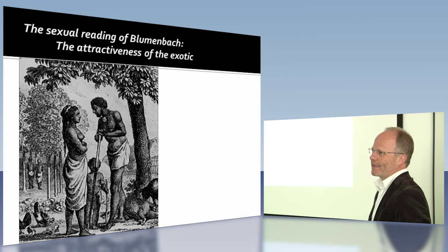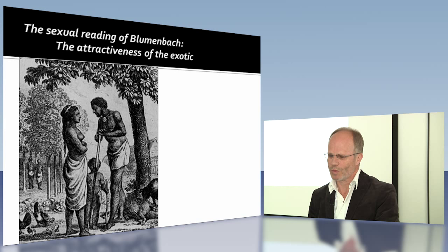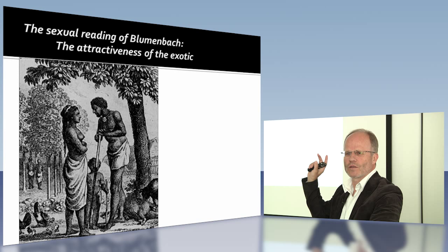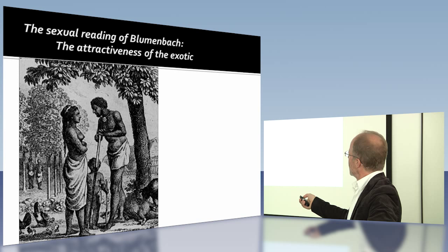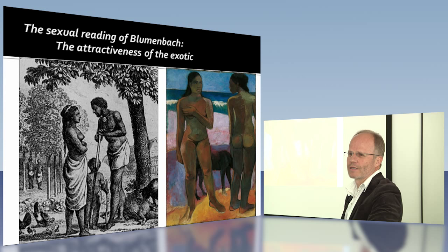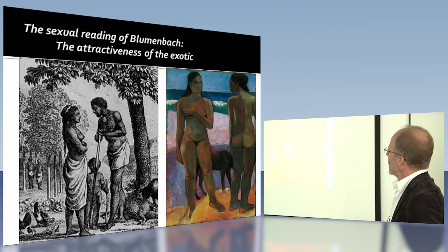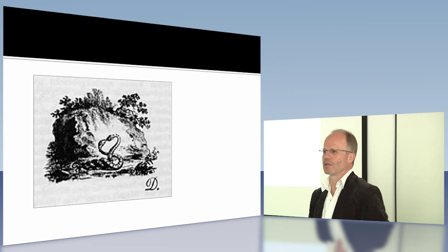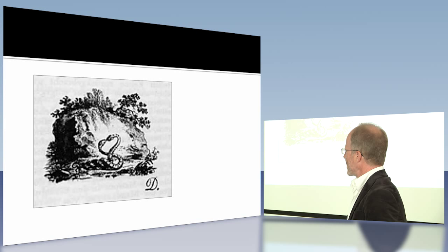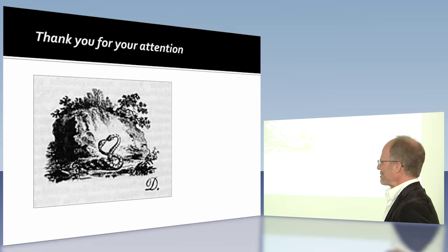And I think this is — as we have heard yesterday as well — this sort of erotic reading of Blumenbach. If you look at his pictures, they all have this erotic connotation. His pictures of the races all have this. You could say he is a forerunner of people like Gauguin, who have this interest in the foreign, in the attraction of what is different. I want to end with this little picture from his book on the Bildungstrieb — there you see his picture of the Garden of Eden with two snakes making love. And with this picture, I want to thank you for your attention.